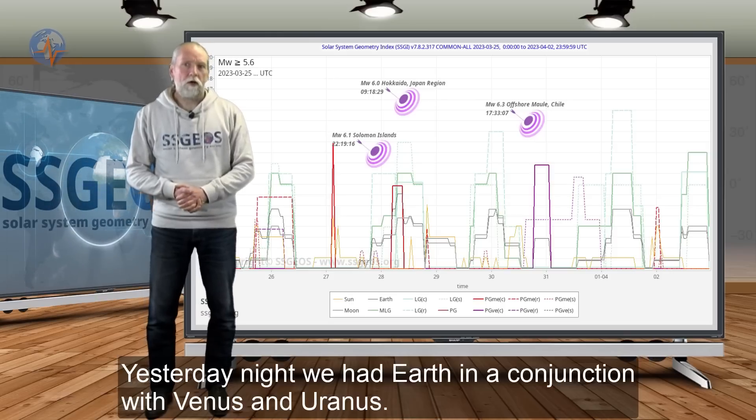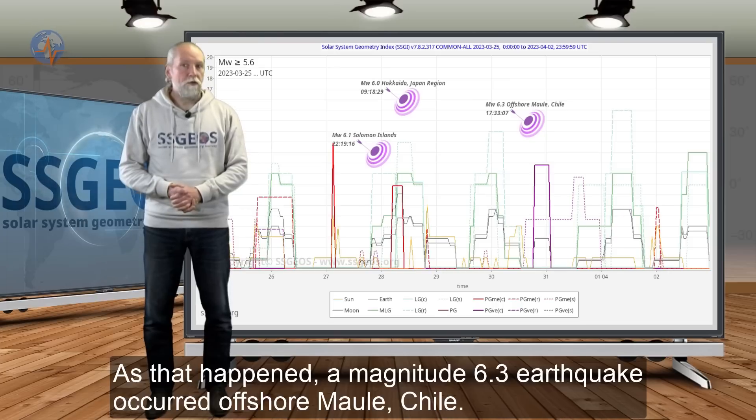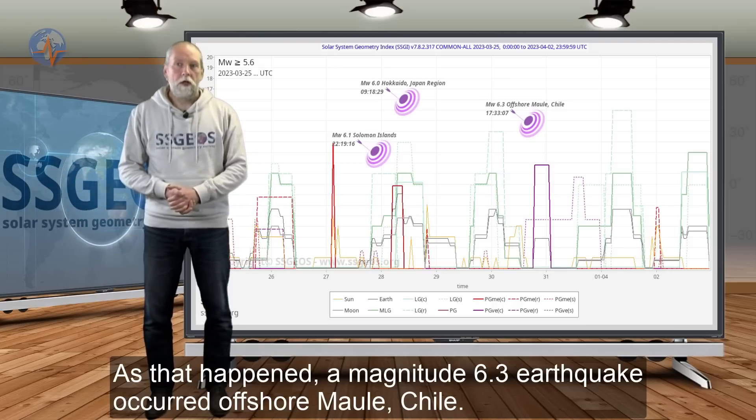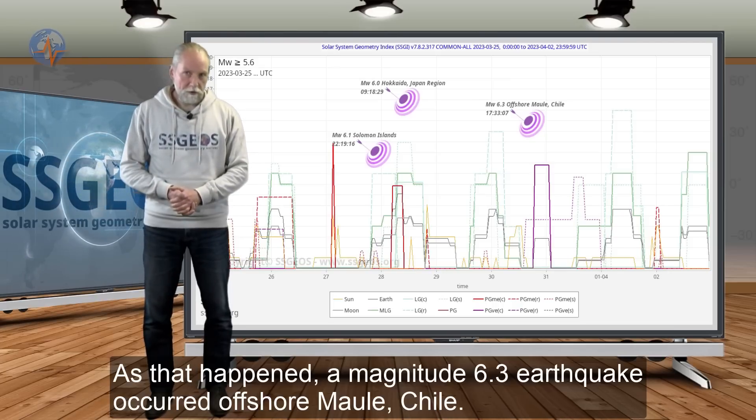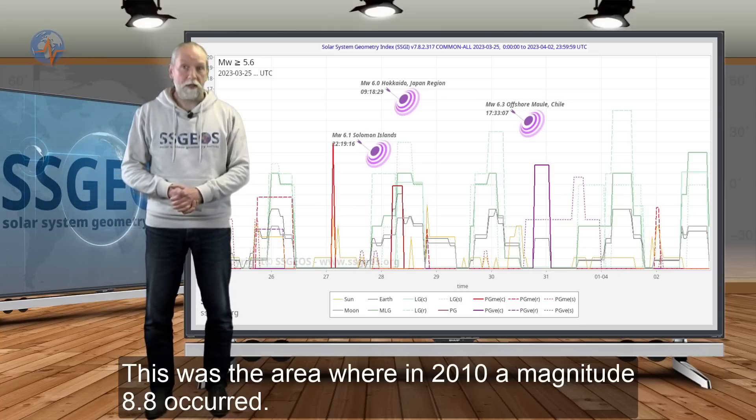And yesterday night we had Earth in a conjunction with Venus and Uranus, and as that happened a magnitude 6.3 earthquake occurred offshore Maule Chile. This was the area where in 2010 a magnitude 8.8 occurred.